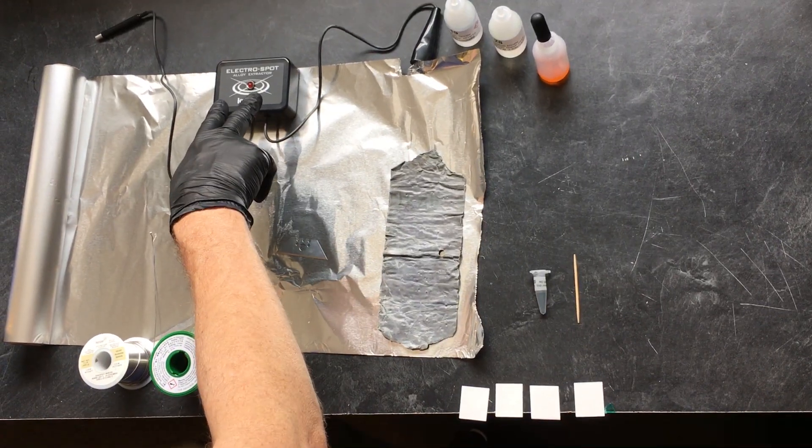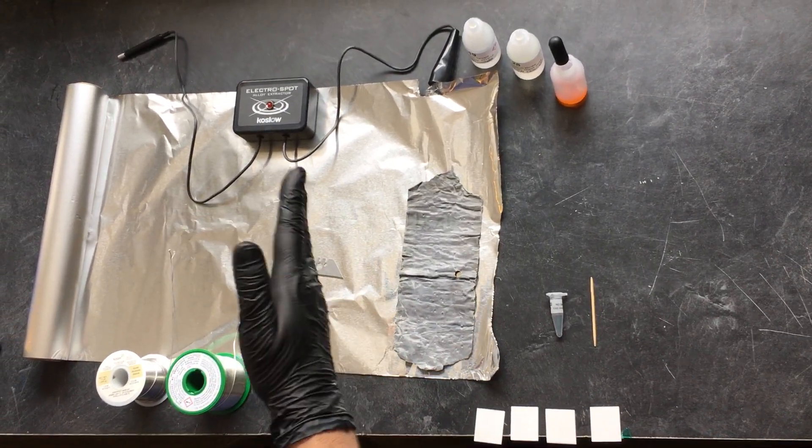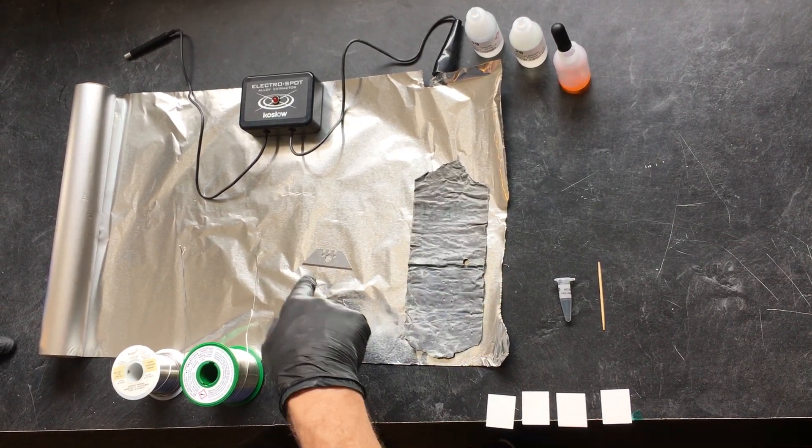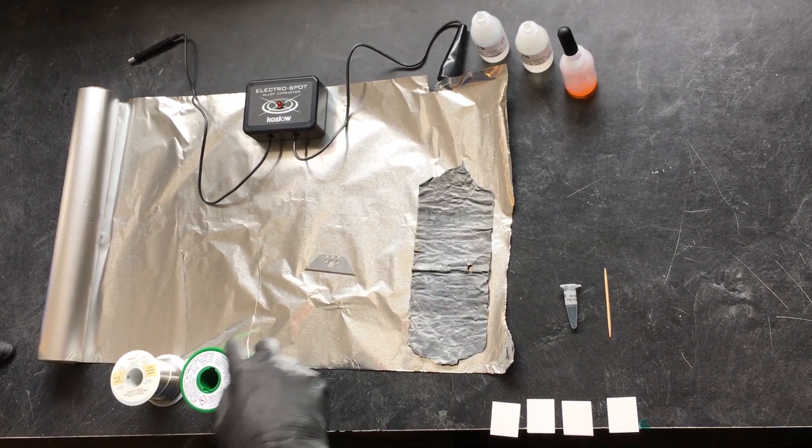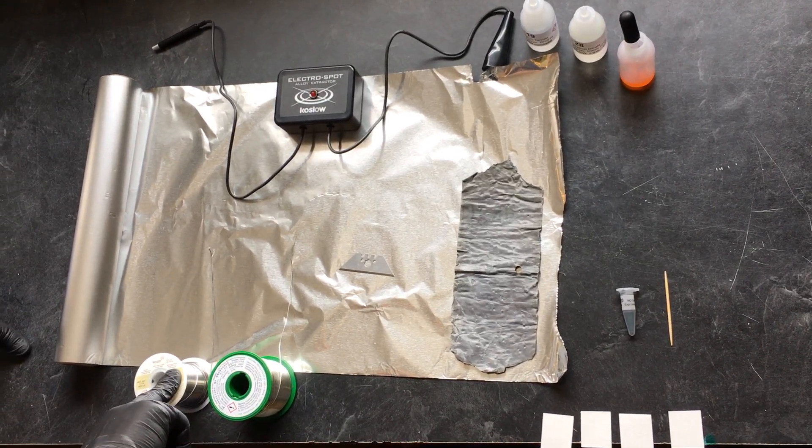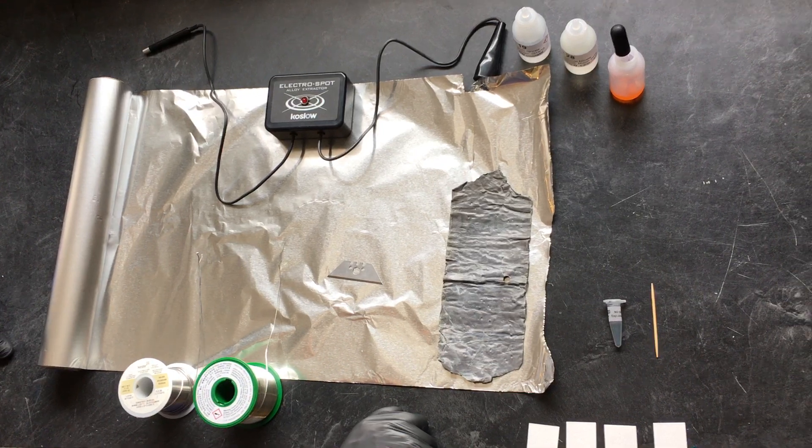I'm using the Kozlo ElectroSpot and I have four objects here: a sheet of lead, an ordinary razor blade, this green roll is lead-free solder, and this is regular solder. And let's try the results.